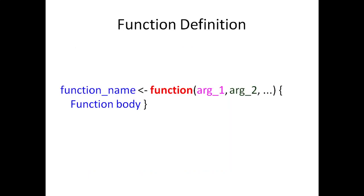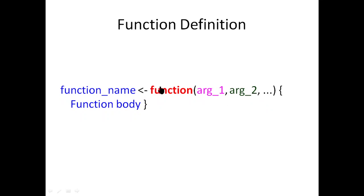The result may be stored in another object. So this is a function definition. The function name is a variable — it's like an object name. It uses an assignment operator. The keyword 'function' is used in the R language. Arguments are the input to the function — we can pass n number of arguments.